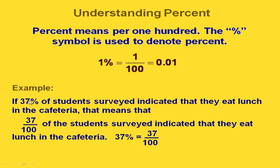Here's an example. If 37% of students surveyed indicated that they eat lunch in the cafeteria, that means that 37 hundredths of the students surveyed indicated that they eat lunch in the cafeteria. So 37% is the same as 37 over 100, or 37 one hundredths.